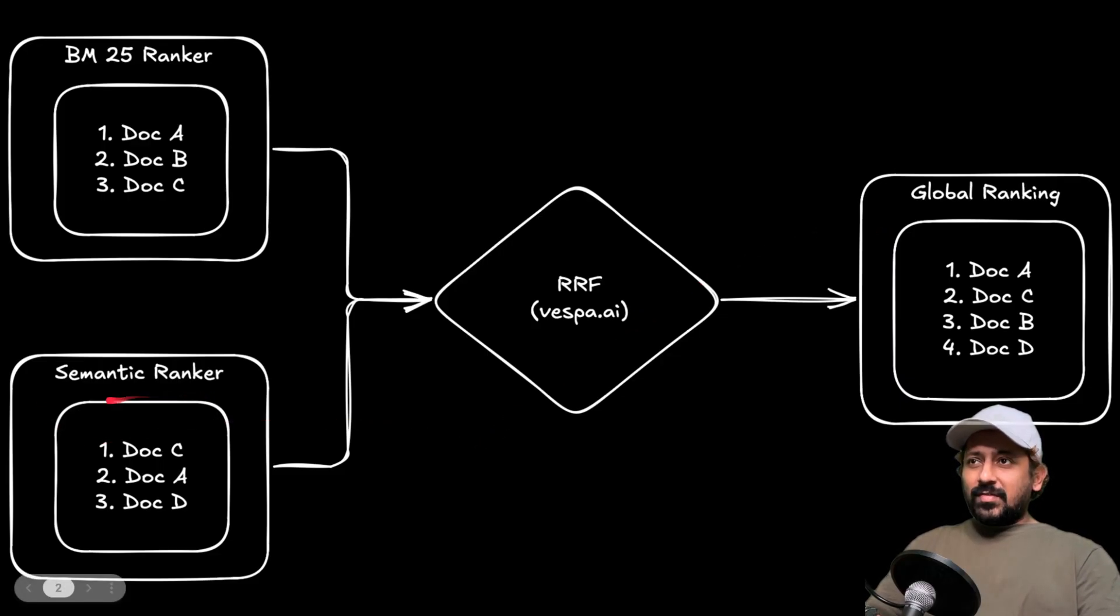So if you remember, we used semantic ranker to do the first phase ranking and then take the top 1000 results and then combine it with BM25 ranker using reciprocal rank fusion. So what happens is each model is giving you a list of ranked documents.